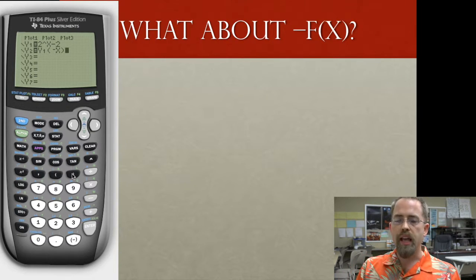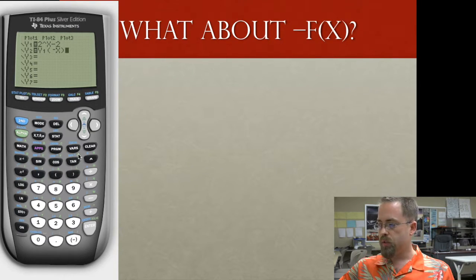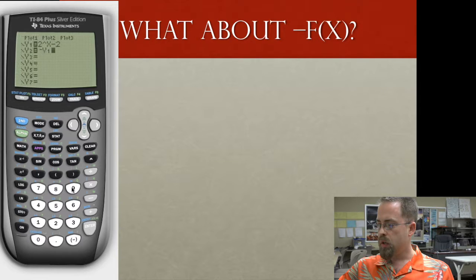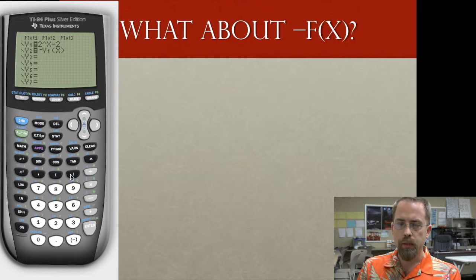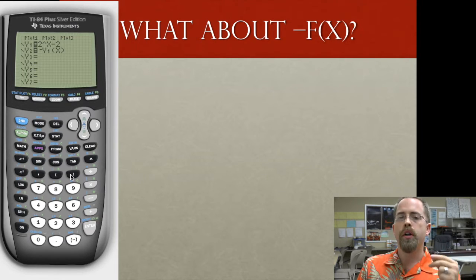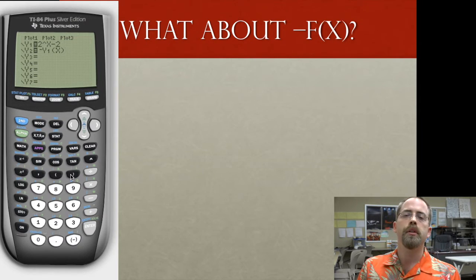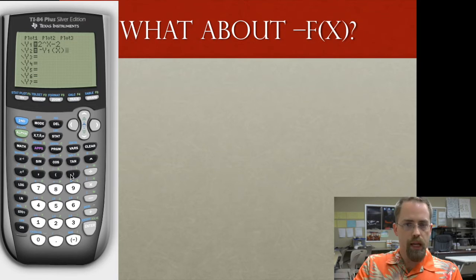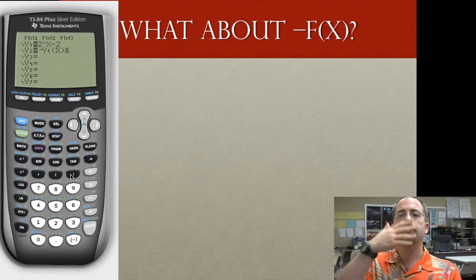What about putting a negative on the outside? So if I put that in the calculator, I want negative vars, y vars, y1 of x. What's this going to do? Well, I'm going to plug in my x. I'm going to run it through the middle of the function and get some particular outputs, but then I'm going to take all those outputs and flip them. The positive outputs will become negative. The negative outputs will become positive.